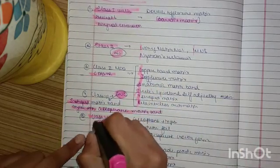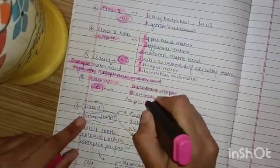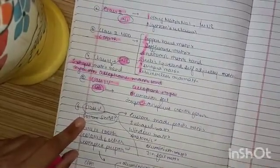Now, Class 4, you must remember CAT. Xylophane strips, aluminium foil, and transparent plastic crown form.